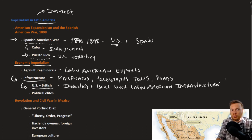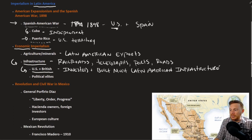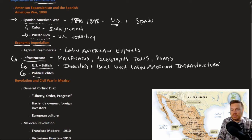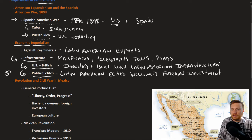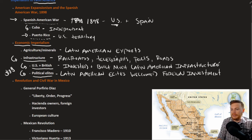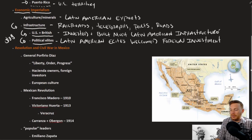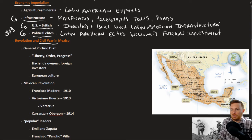It wouldn't be uncommon, for example, for a U.S. company to own something like 70% of the railroad industry in Mexico, and this was true for many other countries as well. These foreign investments were allowed because they benefited the political elite. Latin American elites welcomed foreign investment because they could still profit from it. It was largely the rest of the population that didn't benefit, which contributed to political instability in the region.